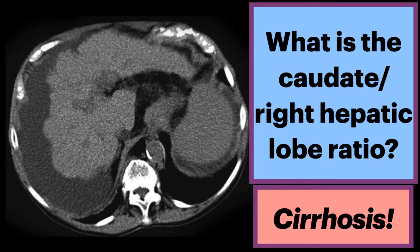On this non-contrast CT, we see very advanced cirrhotic disease with a small nodular liver. There's hypertrophy of the caudate lobe as well as extensive ascites.